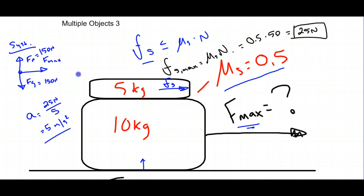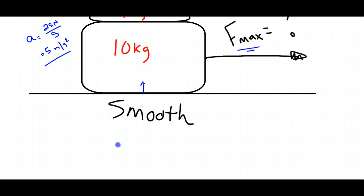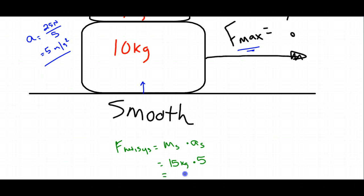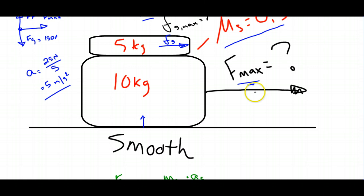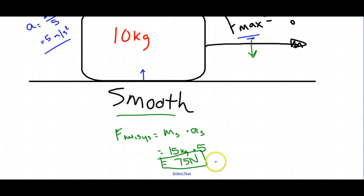Writing the system net force expression: Fnet equals mass of system times acceleration of system. The mass of the system is 15 kilograms, and the acceleration can only reach 5 meters per second squared before the 5 kilogram object on top starts to slide. So the maximum Fnet before sliding is 15 times 5, which equals 75 newtons — applied strictly as the force to the right on the smooth surface. At 75 newtons or below, the object stays on top; greater than 75 newtons, it starts to slide.